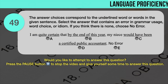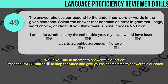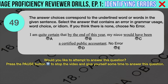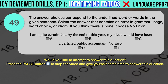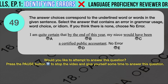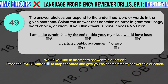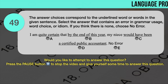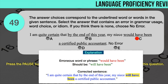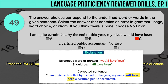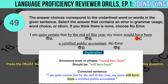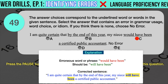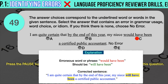Drill question number 49. 'I am quite certain that by the end of this year, my niece would have been a certified public accountant.' The underlined words are: A. Quite certain, B. By the end of this year, C. Would have been, D. A certified public accountant. The correct answer is C. 'Would have been' should have been 'will have been.' The time marker 'by the end of this year' suggests the action will be completed sometime in the future, so it should be changed to the future perfect tense 'will have been.' Correct sentence: I am quite certain that by the end of this year, my niece will have been a certified public accountant.